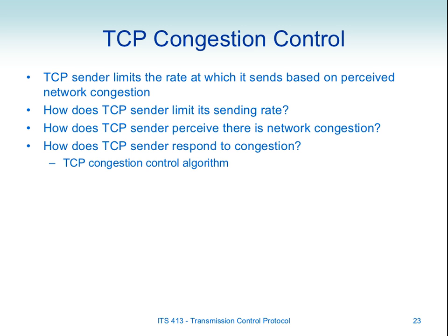TCP congestion control addresses congestion that occurs at routers between the source and destination. Essentially the routers become overwhelmed, receiving too many packets to send out. The routers have buffers, and those packets start to queue up. If the buffer becomes full, a packet will be dropped.